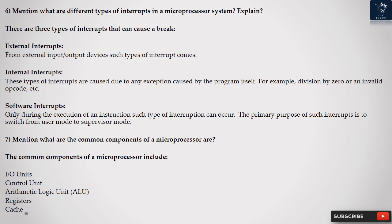Question 7: Mention what are the common components of a microprocessor? The common components of a microprocessor include: I/O Units, Control Unit, Arithmetic Logic Unit (ALU), Registers, Cache.